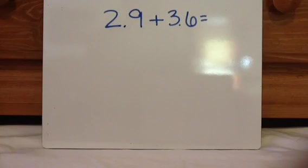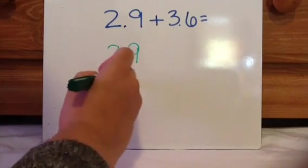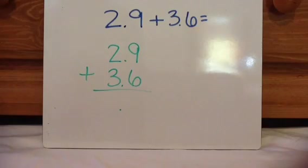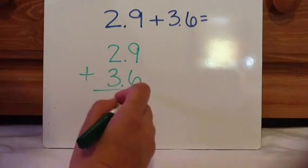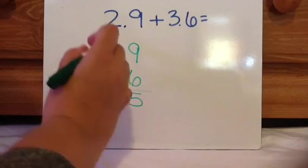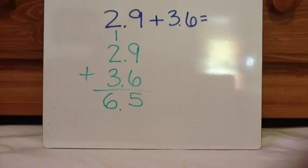So let's look at another example. 2.9 plus 3.6. So write them on top of each other where the decimals are lined up. And go ahead and put your decimal in your answer. Then go ahead and add 9 plus 6 is 15. Carry the 1. 3 plus 2 plus 1 equals 6. My answer is 6.5 or 6 and 5 tenths.